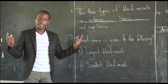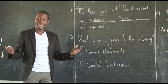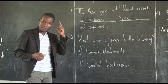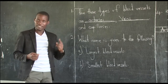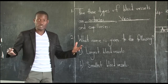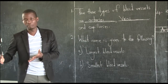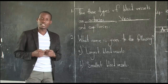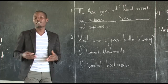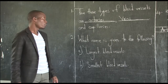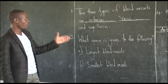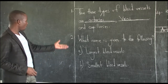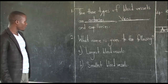We know arteries are the largest blood vessels. The largest artery in the body is the aorta. The veins are medium blood vessels, and the largest vein in the body is the vena cava, as we discussed last time. Capillaries are the smallest blood vessels.